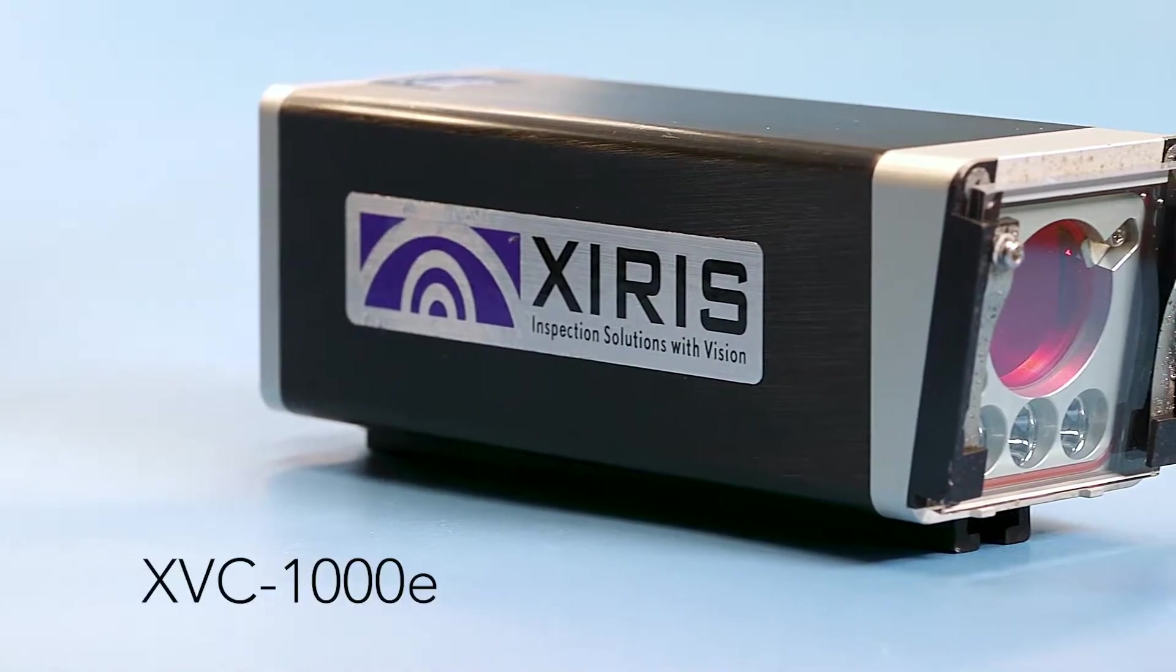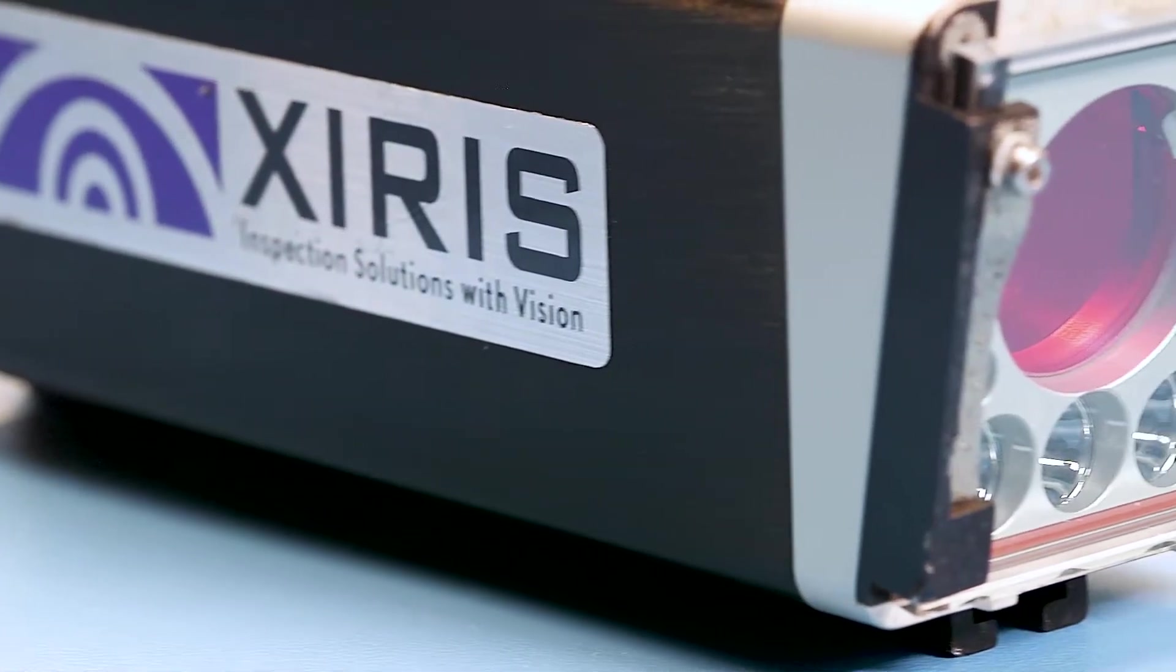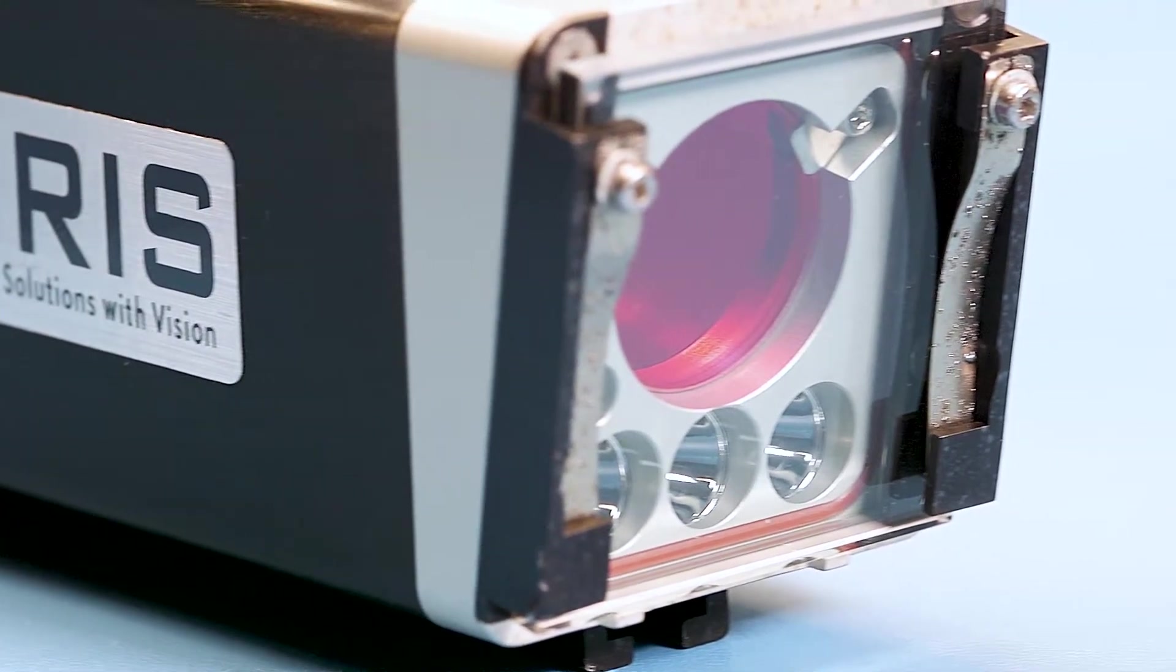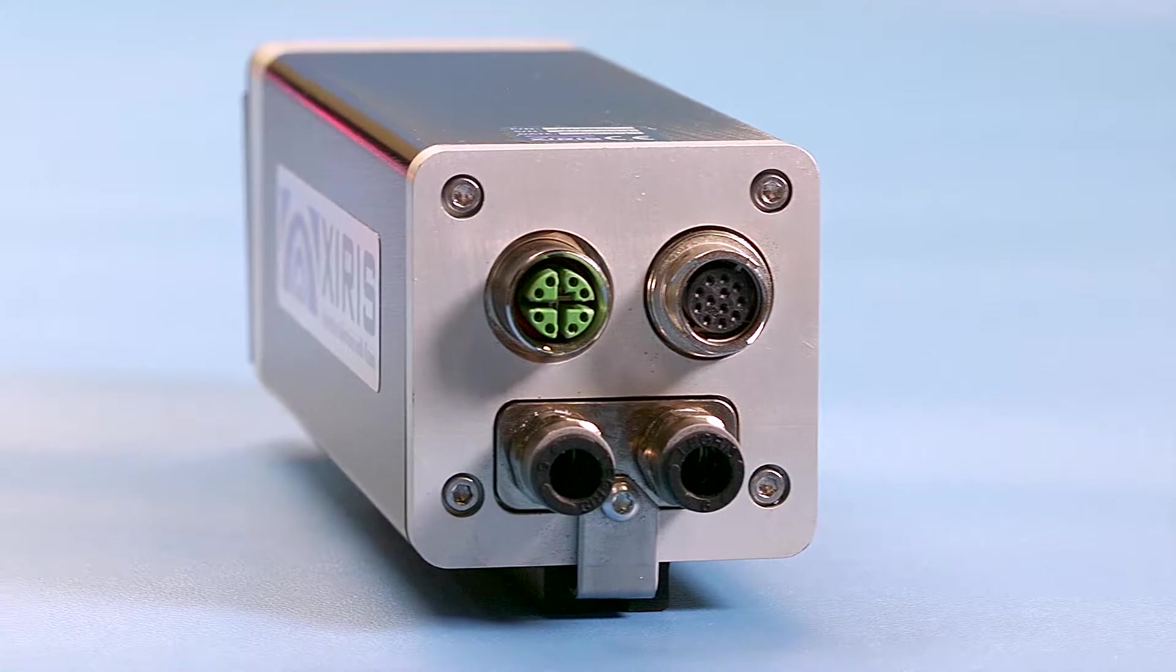The XVC-1000E is a ruggedized version of the 1000, featuring integrated light sources and optics, a motorized focus, air or water cooling, and a protective spatter window, all in a robust, industrialized housing.